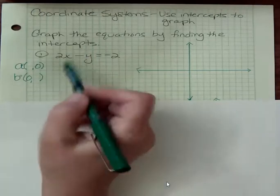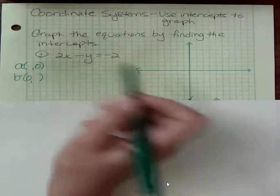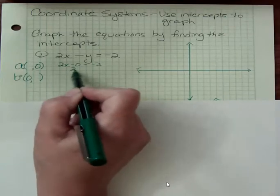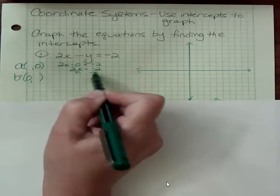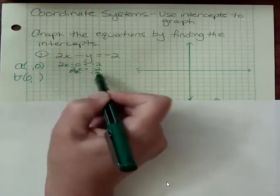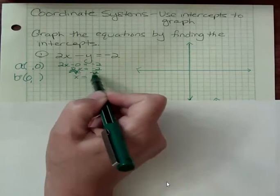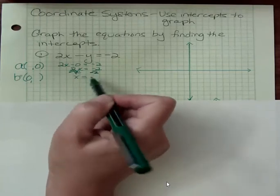Okay, what if y is zero here? Then I would say 2x minus zero is negative two. 2x is negative two, and I divide both sides by two, and I get x equals—this is just two, not negative two—x equals negative one.